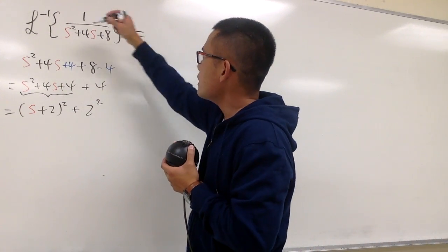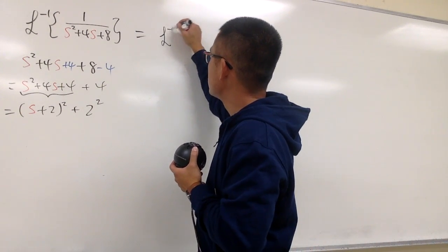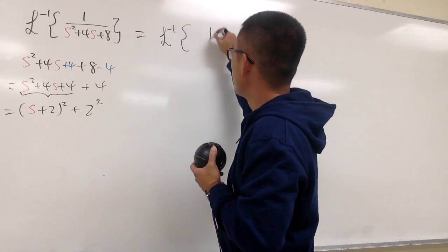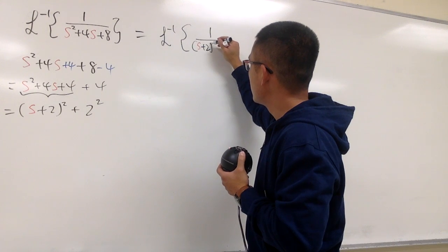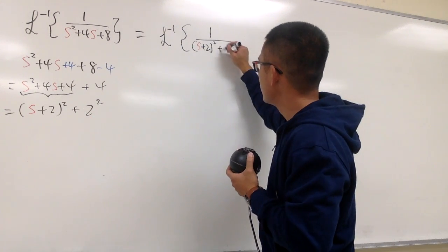Now, so here, we will have the inverse Laplace. On the top, then put down 1 over. We have the s plus 2, and then square, and then plus 2 squared.